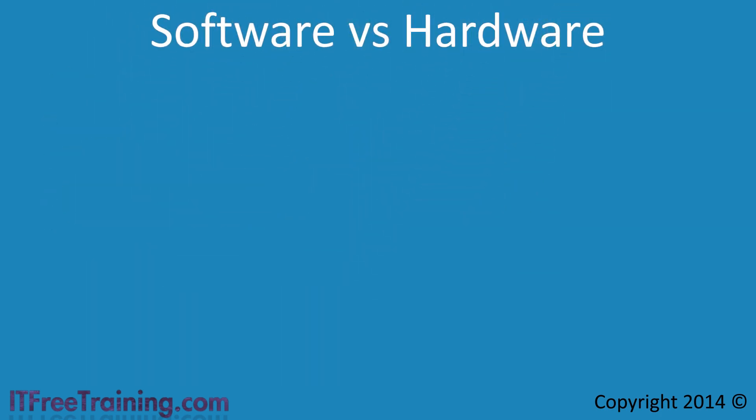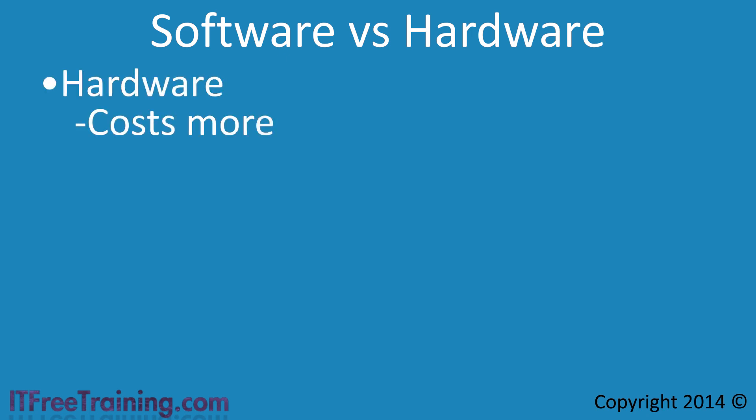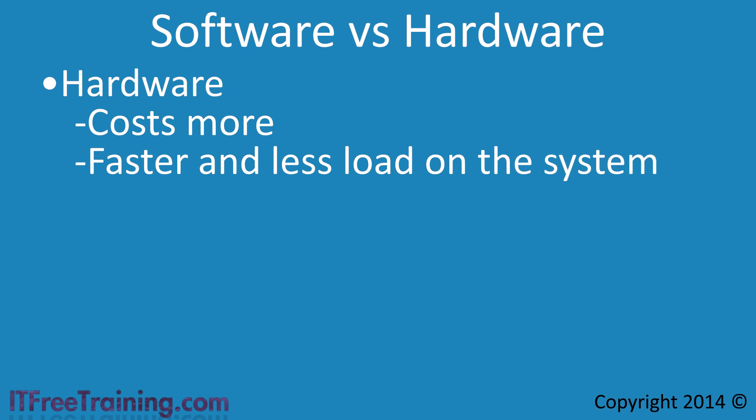The first point to consider before choosing a storage solution is whether you will use hardware or software. A hardware solution will generally cost more than a software solution. Nowadays, a lot of motherboards come with RAID solutions at no extra cost. If you start looking towards having a RAID solution in a server with hot swappable drives, this can push the cost of the server up. For a server, purchasing a system with RAID and hot swap drives is recommended. Hardware has the advantage of taking some of the load off the system, which generally makes hardware faster than a software based solution.